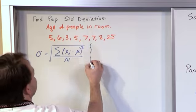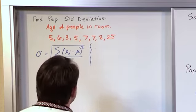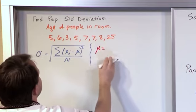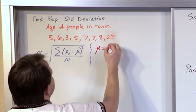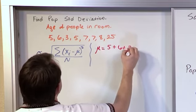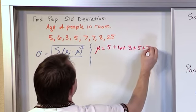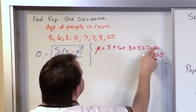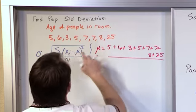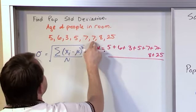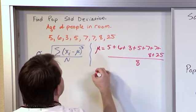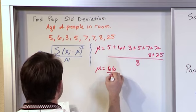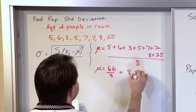So, the first thing we want to do, and I'll do it in red over here, is we want to find out what is the actual population mean. So, we add everything together: 5 plus 6 plus 3 plus 5 plus 7 plus 7 plus 8 plus 25. So, I had to continue on the next line. We divide by 8. So, what we get when we do that is 66 on the top and 8 on the bottom. So, we get 8.25.